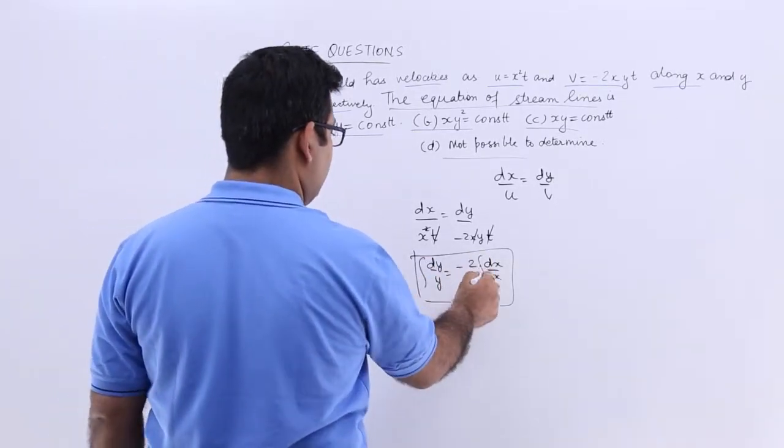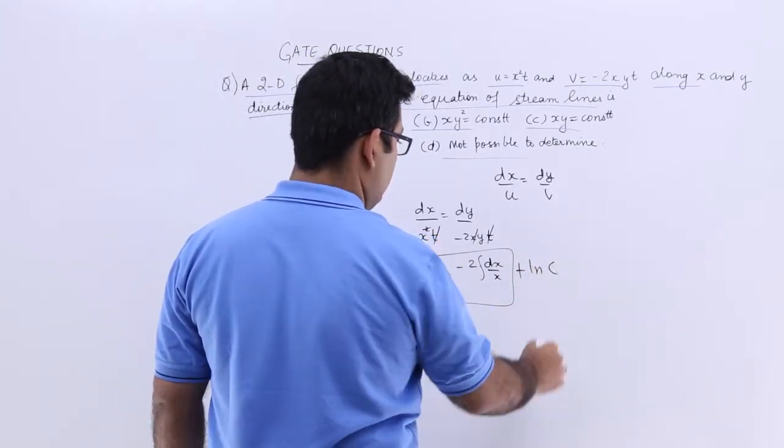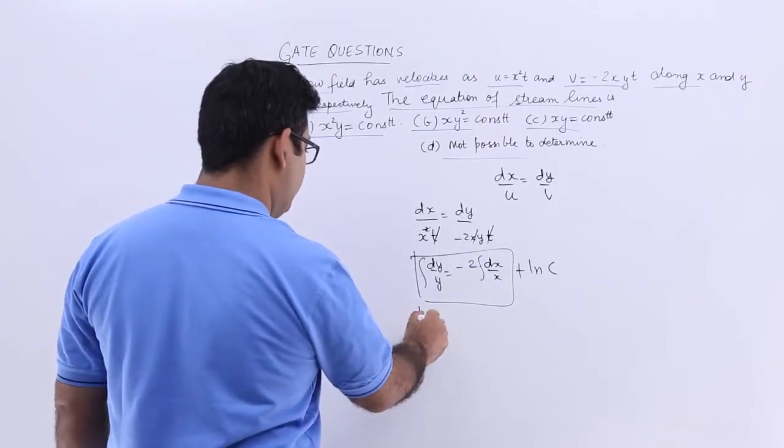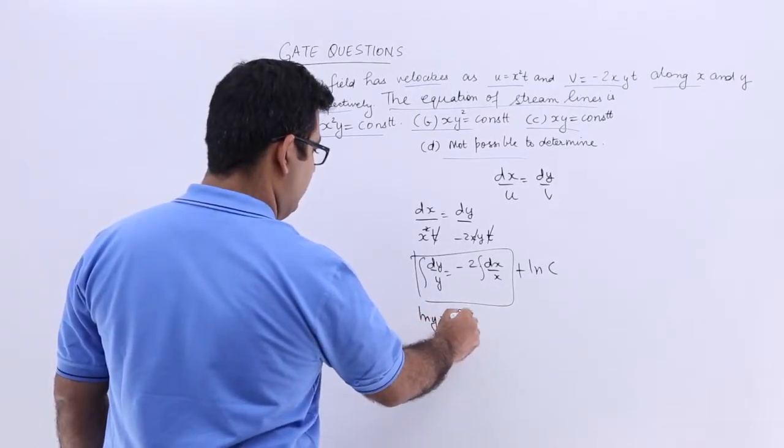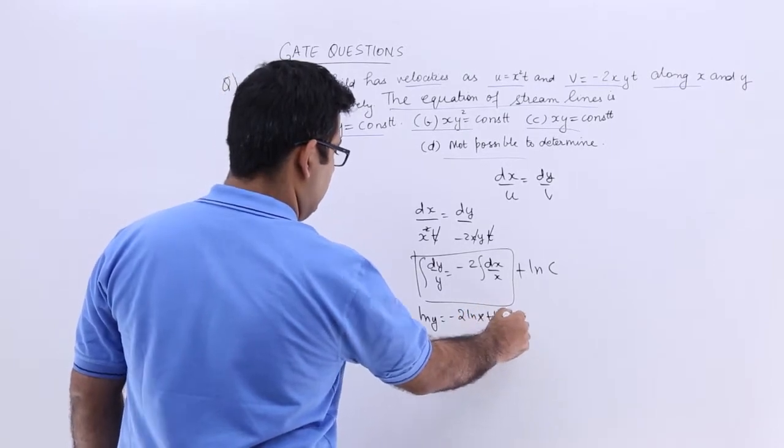So now I will just integrate it and we will add a log c constant. So you will have log y is equal to minus 2 log x plus log c.